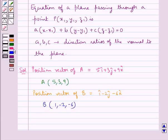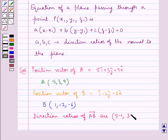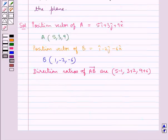Now next we find out the direction ratios of vector AB. These are given by 5 minus 1, 3 minus minus 2 which is 3 plus 2, and 9 minus minus 6, so 9 plus 6. So the direction ratios of vector AB are 4, 5, 15.